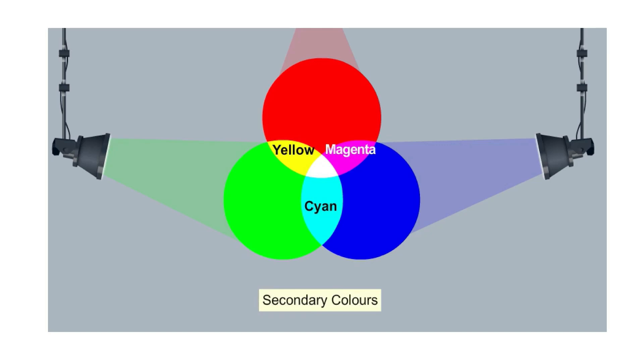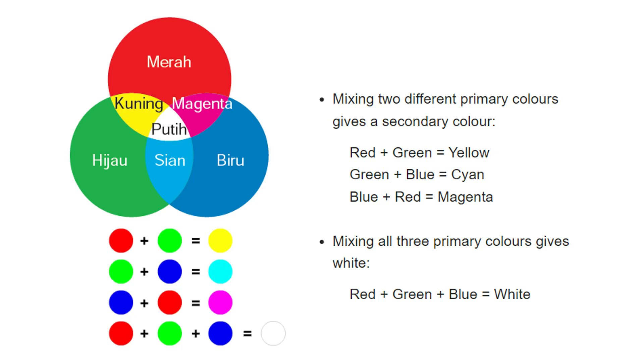kuning dan cyan adalah warna sekunda. When the lights of all three primary colours are mixed together, white light is produced. Cahaya warna putih pula dihasilkan apabila ketiga-tiga warna primer ditambah.